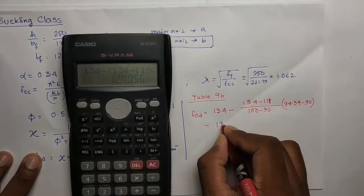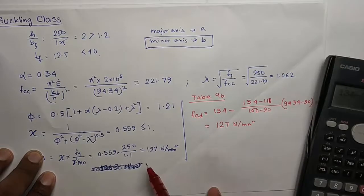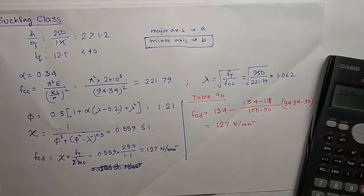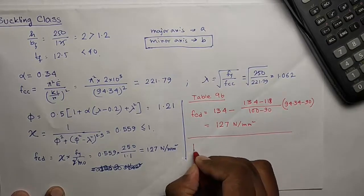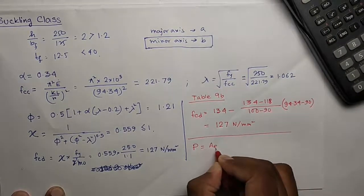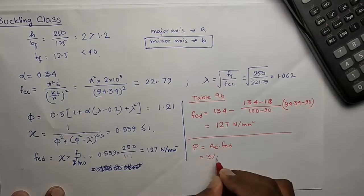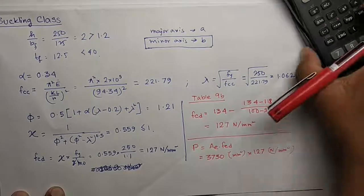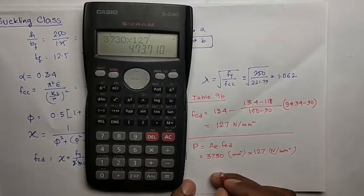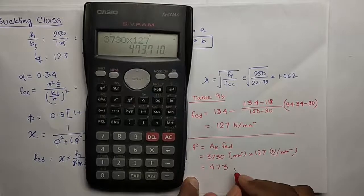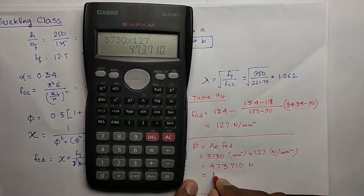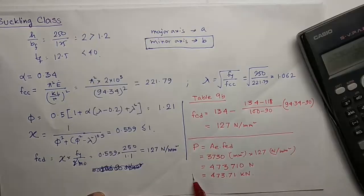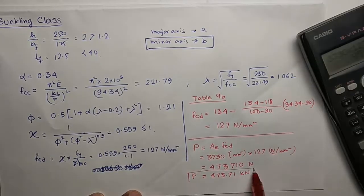You get 127. The value we got here and we got here will be almost equal, may slightly vary. The last step is the design compressive strength P which is AE into Fcd. This is our design compressive strength of a column section.